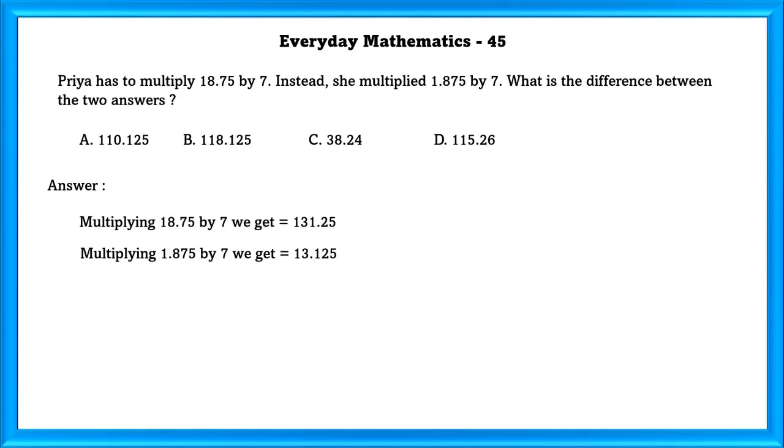Multiplying 18.75 by 7, we get 131.25. Multiplying 1.875 by 7, we get 13.125. Difference between the two answers is equal to 118.125.